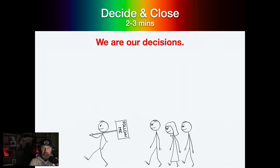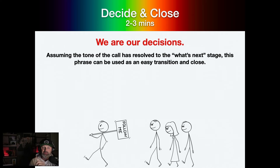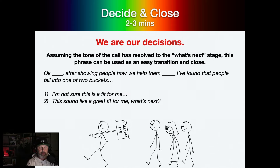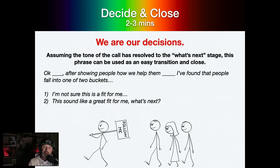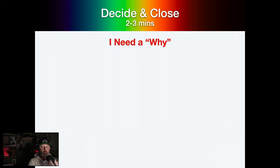Then all we've got to do is give them the opportunity to decide. Assuming the tone of the call has resolved to the what's-next stage, this phrase can be an easy way to transition to a close. Alright Dr. Smith, after showing people how we can help them, I've found that people fall into one of two buckets. Bucket number one: they're not sure — for whatever reason it's not a fit. Or bucket number two: this sounds great, what is next? Which of those buckets do you think you fall into? And then just be quiet. They've made it this far — they should definitely not answer bucket number one. But just because they answer bucket number two doesn't mean they close. We need to give them a reason why — we need to apply urgency and scarcity.